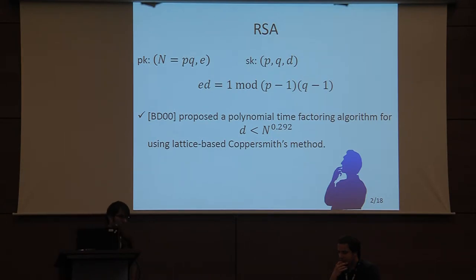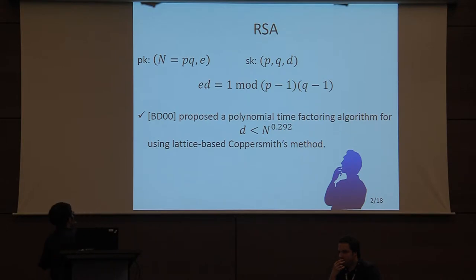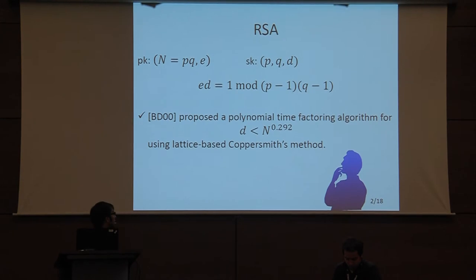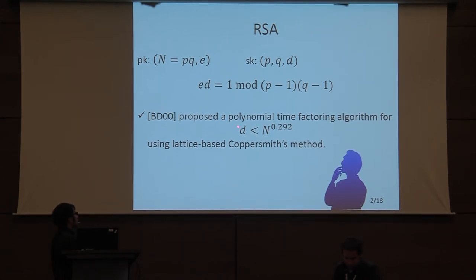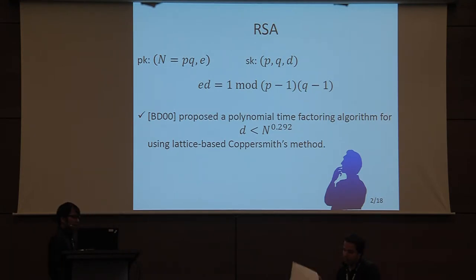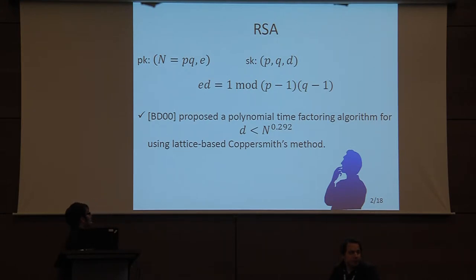In general, it's very hard to break RSA. But as a special case, when the secret exponent D is too small, there are concrete attacks. In particular, Boneh and Durfee proposed a polynomial time attack when the secret exponent D is smaller than N^0.292. The attack makes use of the lattice-based Coppersmith method. Although the Boneh-Durfee attack is heuristic, it works well in practice.